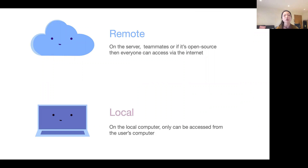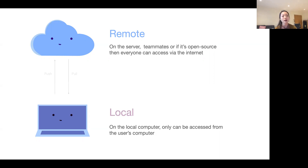With Git on the server, we put all files on the server, so everyone with access to the repository can access it from whatever devices — it doesn't have to be one particular one. If you have commits that are only committed to your local branch, they will only exist on your computer, meaning if you change your computer, you can't see them. Local and remote talk to each other by push and pull commands — we will look at those very soon.